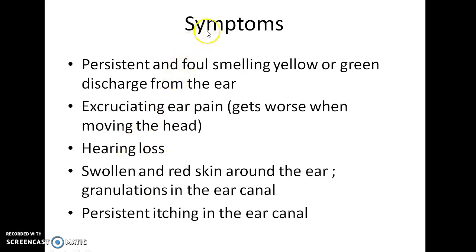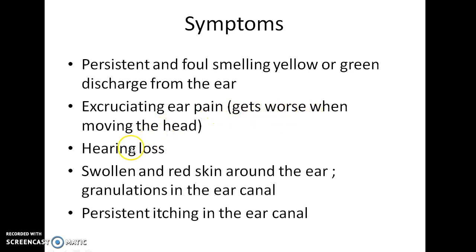What are the symptoms of malignant otitis externa? There are quite a few symptoms. Persistent and foul-smelling yellow or green discharge from the ear, primarily due to Pseudomonas aeruginosa infection. Excruciating ear pain that gets worse when moving the head. There will be hearing loss, swollen and red skin around the ear, and granulations in the ear canal.